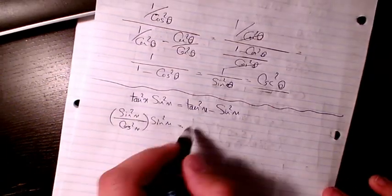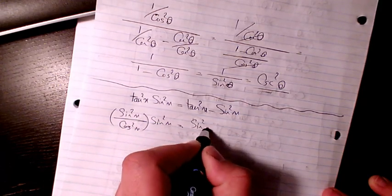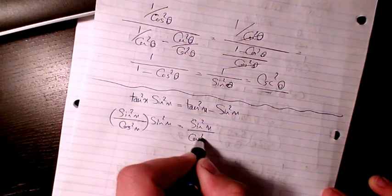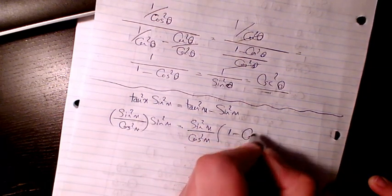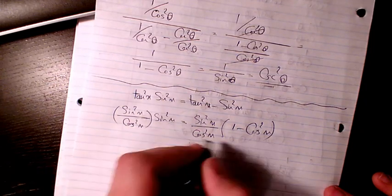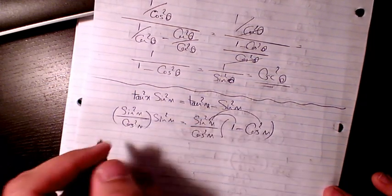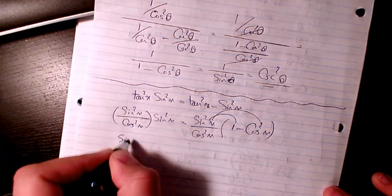So what I can do is I can write sin squared x divided by cosine squared x. Instead of sin squared, I can write one minus cosine squared x. Then I multiply by these two, so I have sin squared x divided by cosine squared x minus sin squared x.